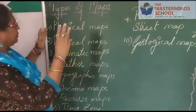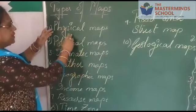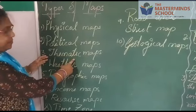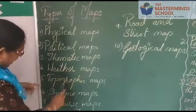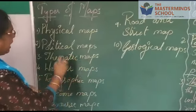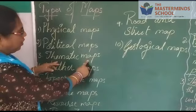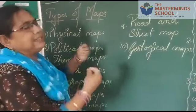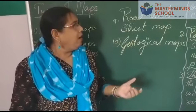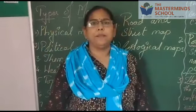The three most important maps are physical maps, political maps, and thematic maps. Weather maps, income maps, and resource maps are all found under the thematic maps. Now I am going to explain in detail what is the physical map, what is the political map, and what is the thematic map.